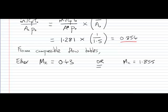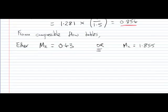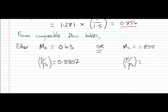You can then scroll across in the tables to find the ratio of P to P0. So at M equals 0.43, P over P0 is equal to 0.8807. For the supersonic case where the flow is purely supersonic, no shockwaves in the duct, P over P0 is 0.161.